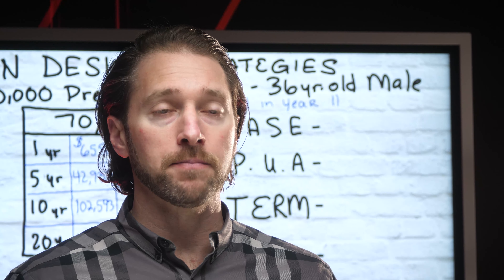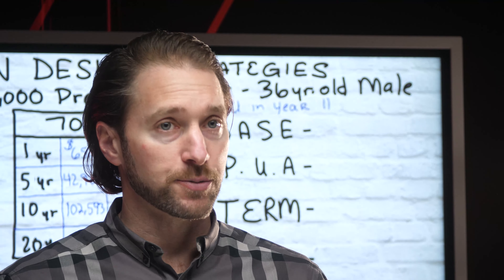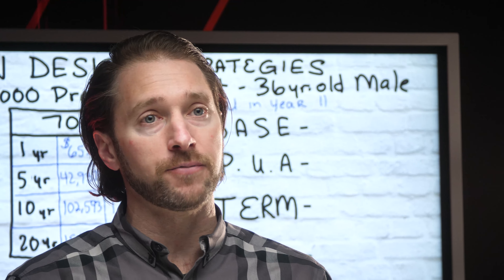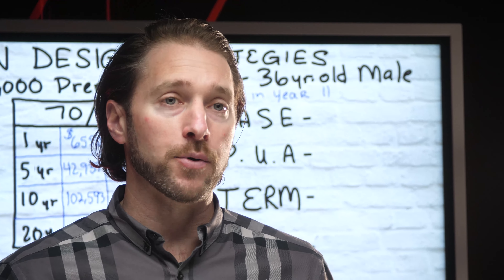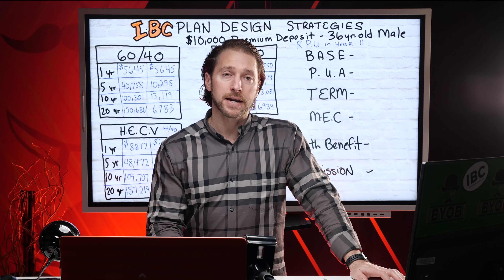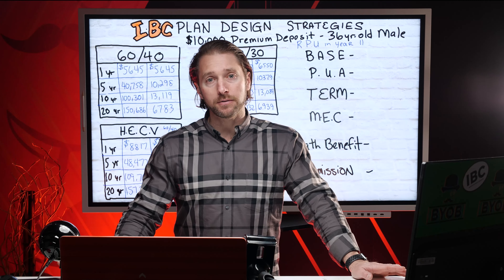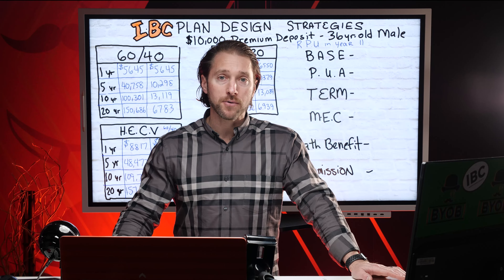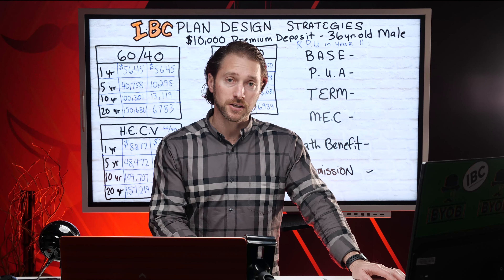But once you know the problem, once you know what we're going to solve using the machine — the specially designed and engineered whole life and the process called the infinite banking concept — now we've got something to go on and we can design it. Designing it comes down to mathematics and the plan. We only use a couple of mutually owned insurance companies that pay dividends, because there are only a few out there that will work for this concept and work efficiently.